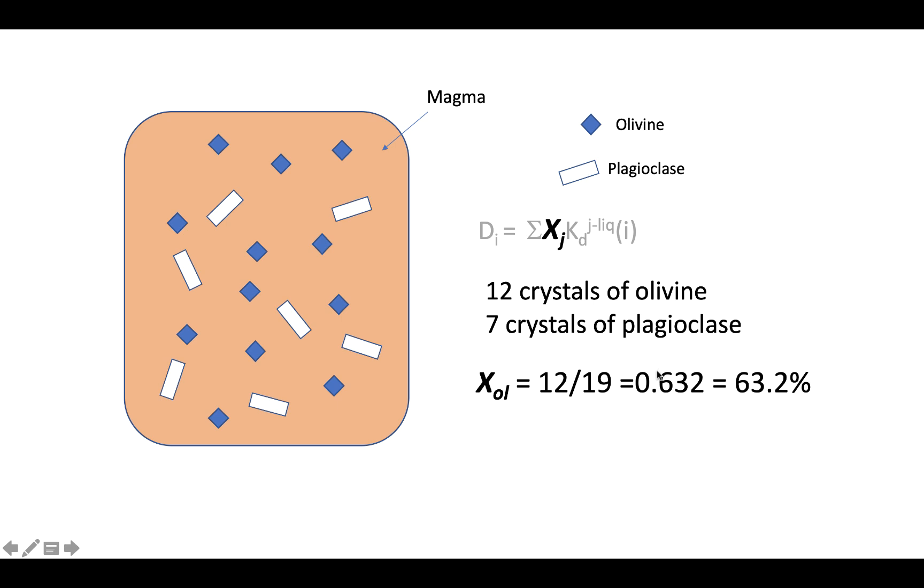We could do the same thing for crystals of plagioclase. We can write X_pl, pl for plagioclase. We have seven crystals of plagioclase out of the total of 19 crystals altogether, and that's 36.8%, or as a fraction, 0.368. So those are our Xj that are going to go into this equation.